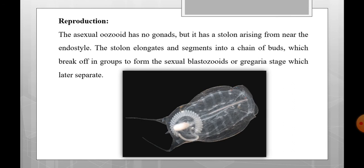The asexual ozoid has no gonads, but it has a stolon arising from near the endostyle. The stolon elongates and segments into a chain of buds, which break off in groups to form the sexual blastozoids or gregaria stage, which later separate. So the ozoid has no gonads, but from the stolon a chain of buds forms, which break off as sexual blastozoids — the gregaria stage — which later separate.